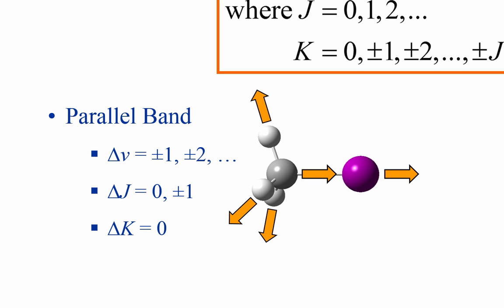This is my methyl iodide molecule. In the symmetric stretch here, all the bonds are stretching. I would classify this as a parallel band because the dipole moment is changing along the principal axis, along the direction of the carbon-iodine bond. So for the parallel band, the selection rules are delta v is equal to plus or minus 1, or plus or minus 2, etc.